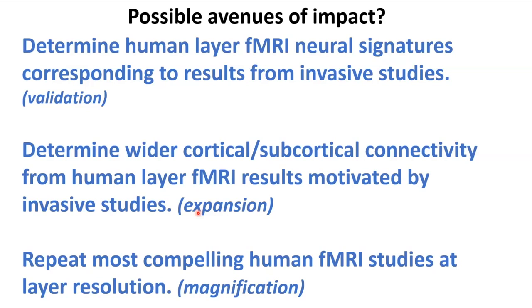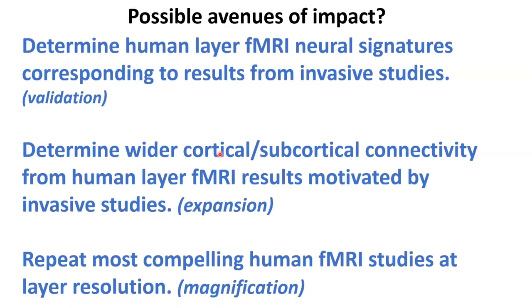What are the possible avenues of impact? First, determine human layer fMRI signatures corresponding to results of invasive studies. I want to emphasize signatures — it's never going to be a one-to-one mapping. It will be some signature bubbling up through neural activity and hemodynamics that maps either spatially or in information space.